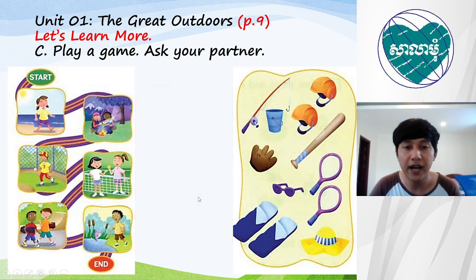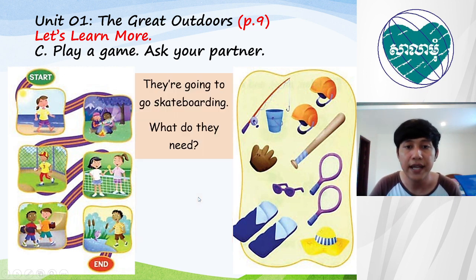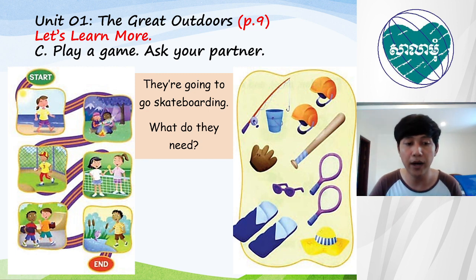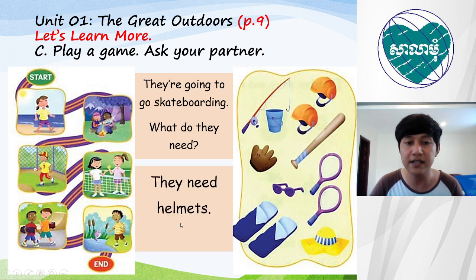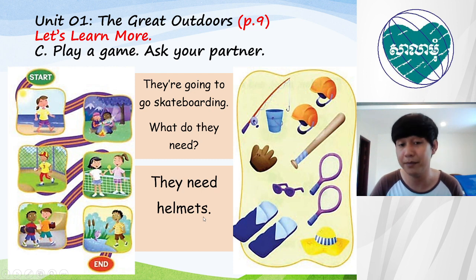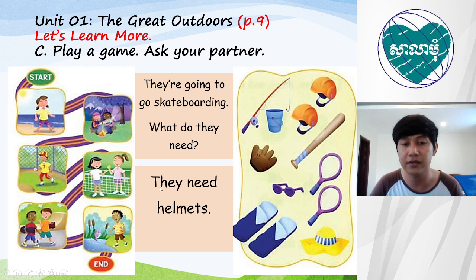Look at number five — they are going to go skateboarding. What do they need, everyone? They have a skateboard and some things, but what is the missing thing? The answer: they need helmets. You cannot say 'they need a helmet' because both of them need different helmets. So look here — two helmets. They need helmets.